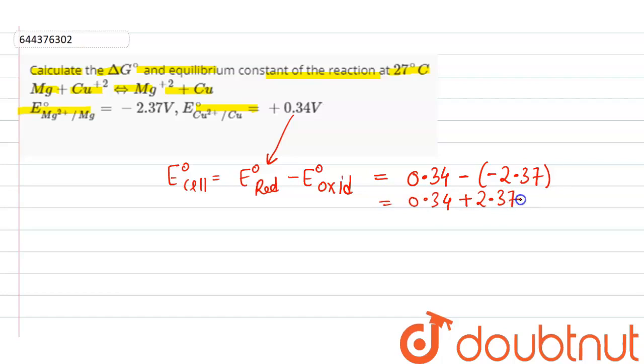Hence the final value will be 2.71 volts. So this is the E⁰ cell.